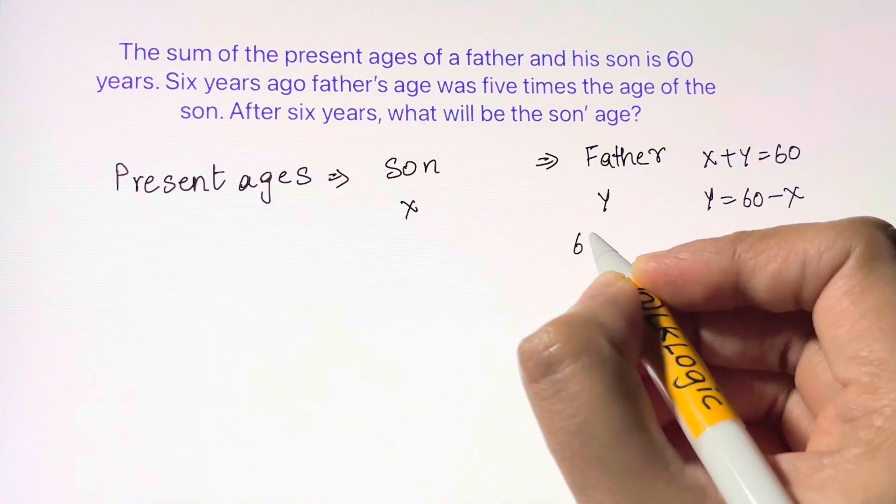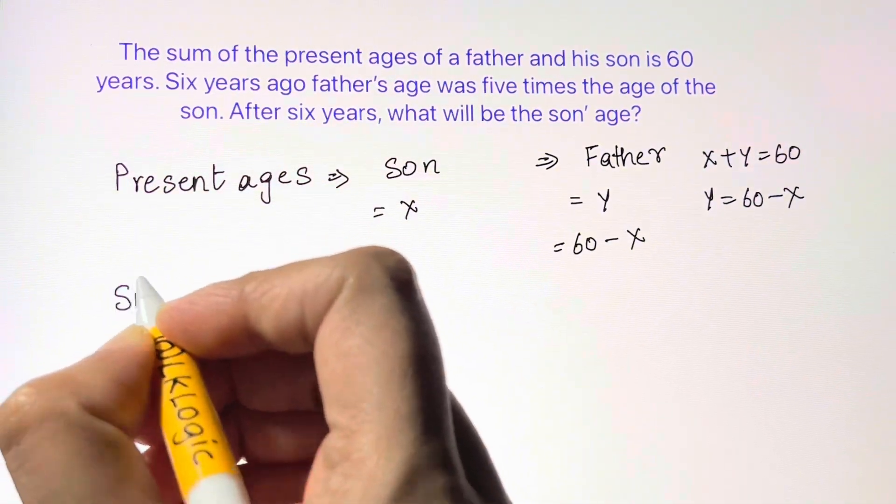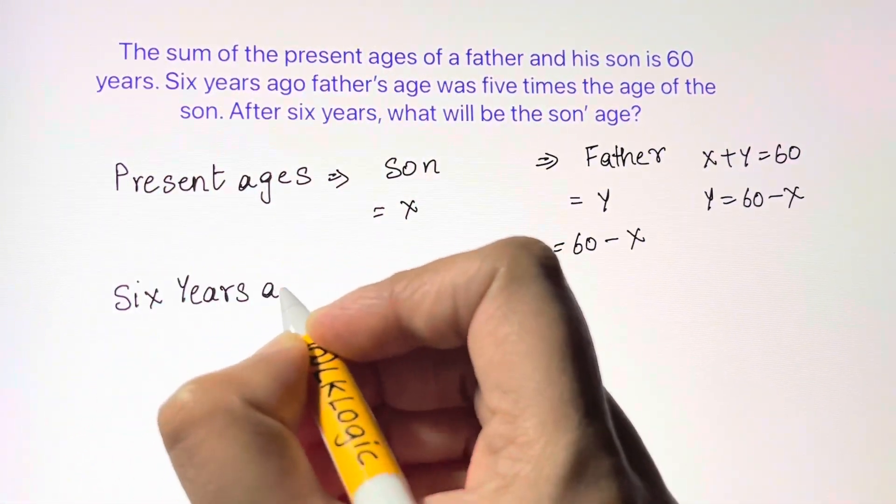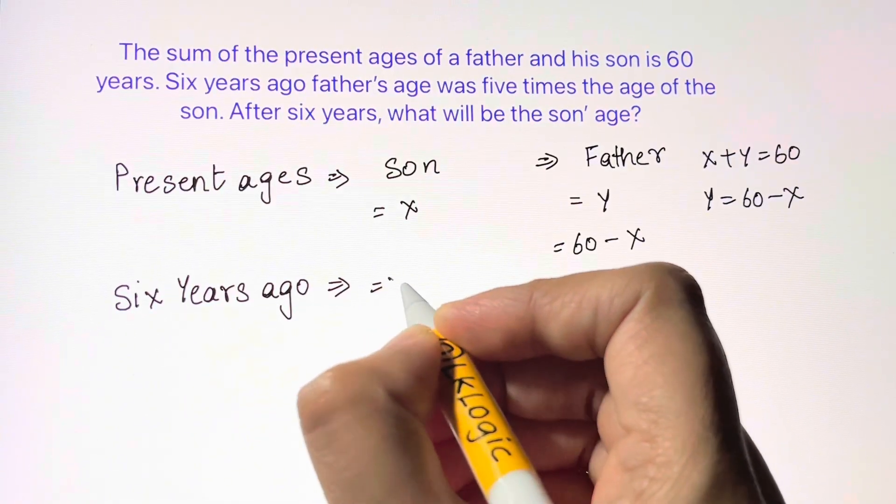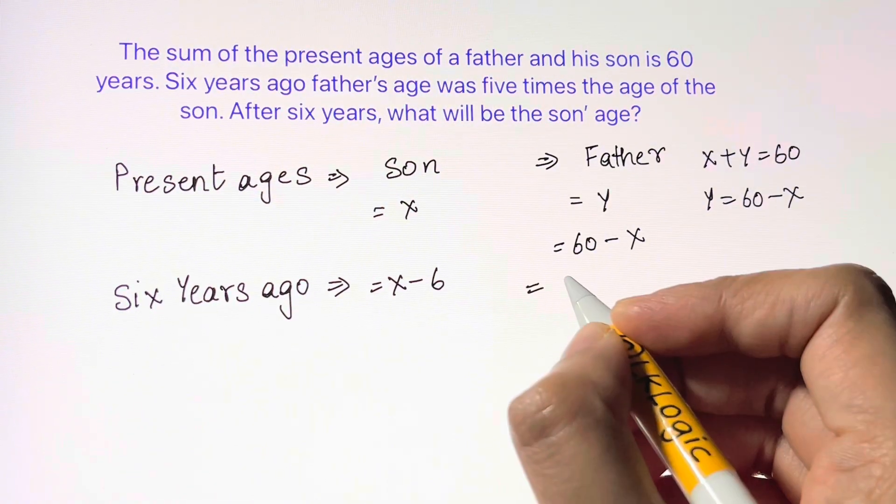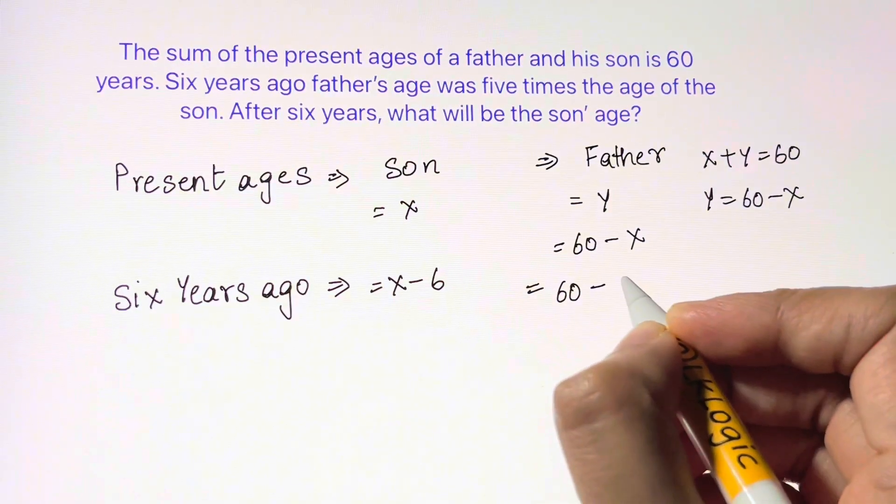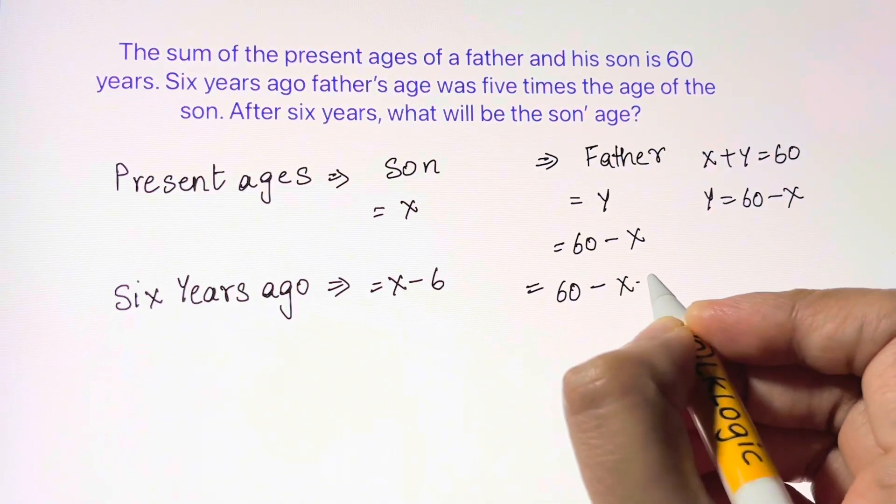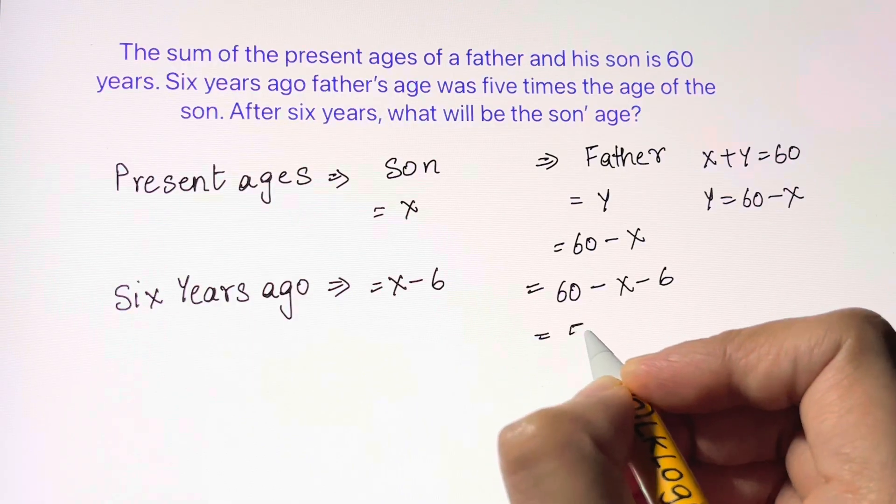That's how we get father's age in terms of x. Now let's write down six years ago: we reduce six years from the son's present age, that is x - 6. We reduce six years from the father's age as well, so 60 - x - 6, which gives us 54 - x.